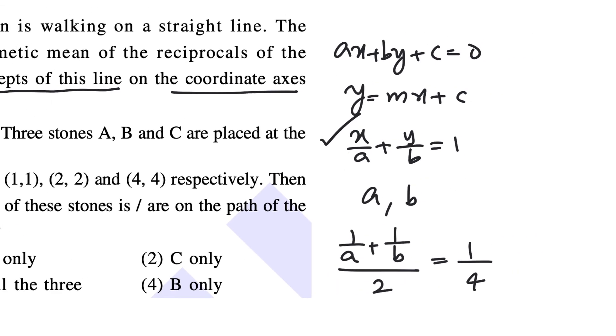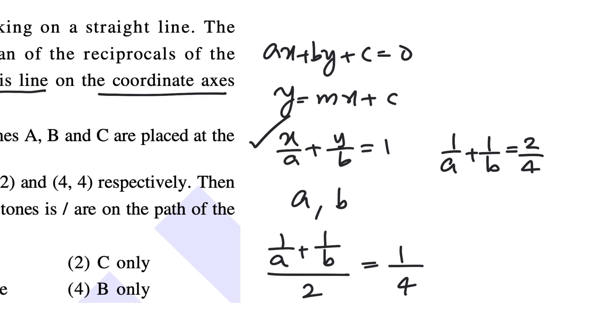So from this we have 1/A plus 1/B equals 2 by 4. So that is 1 by 2. Now I take 2 to the other side. So I have 2/A plus 2/B equals 1.